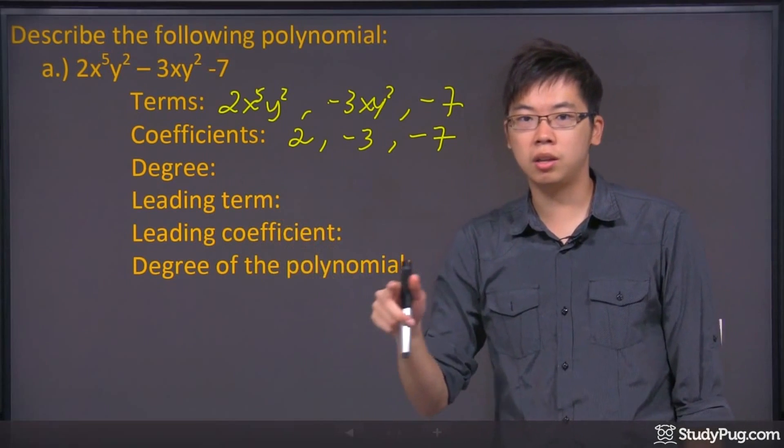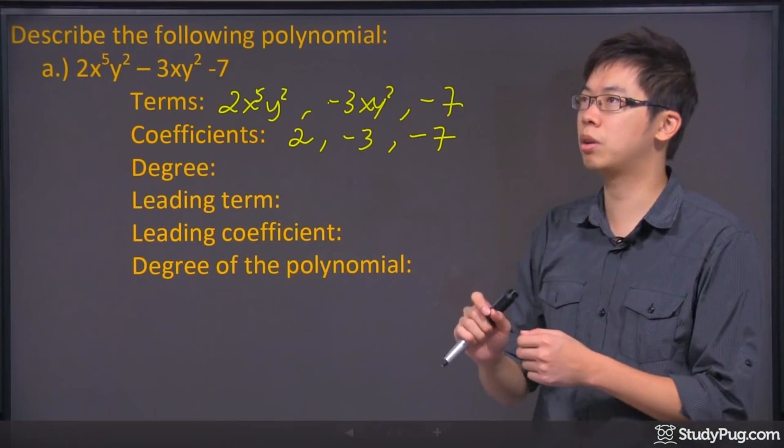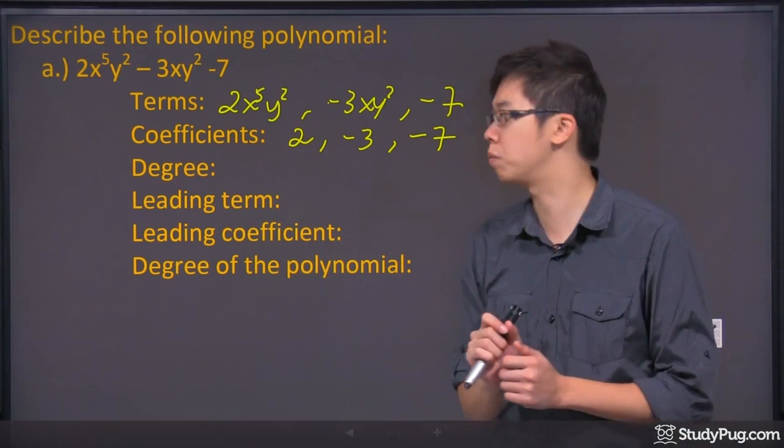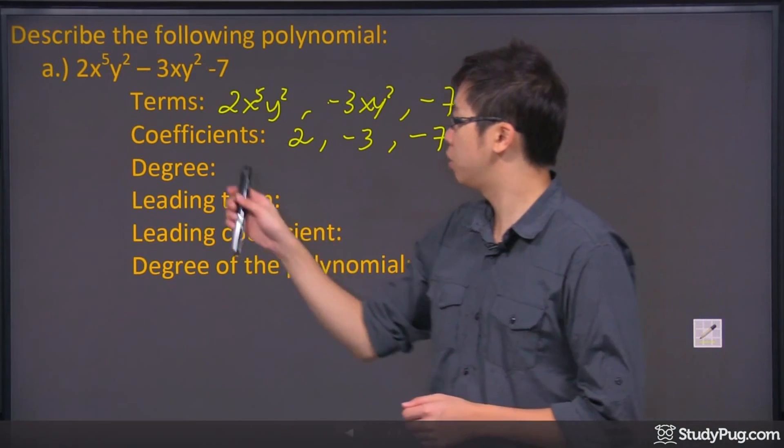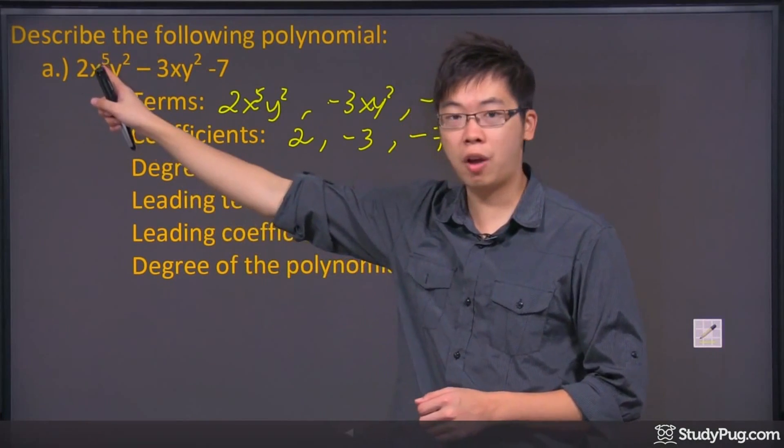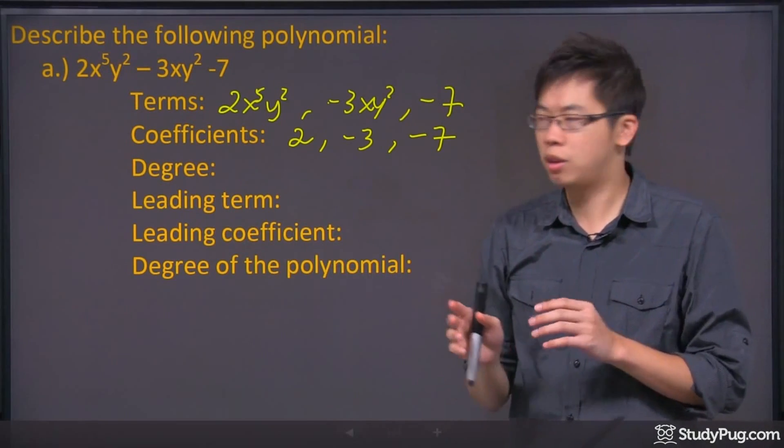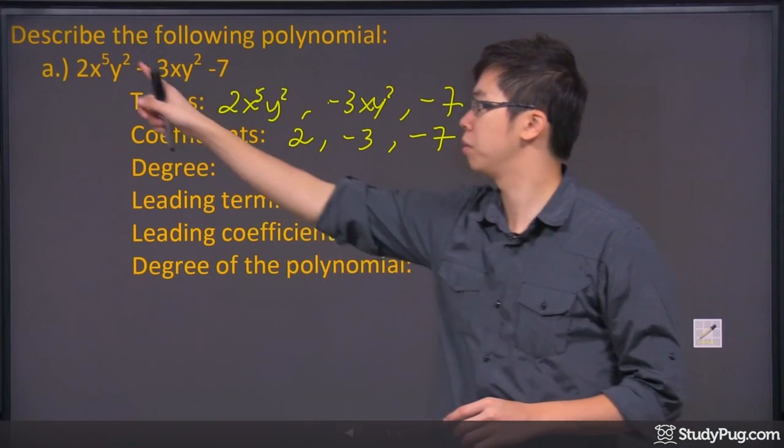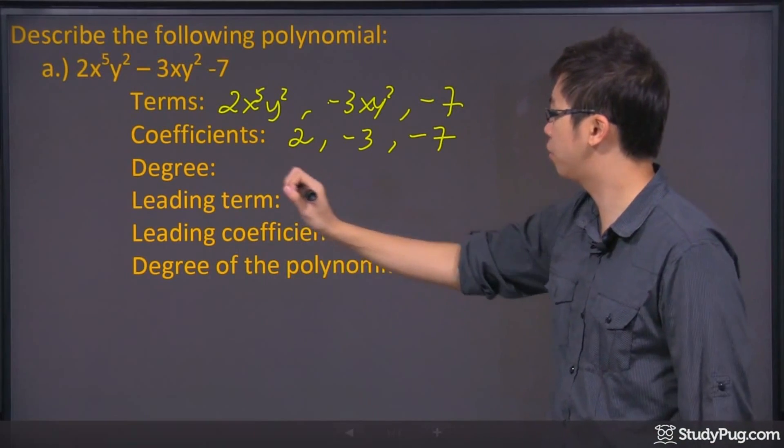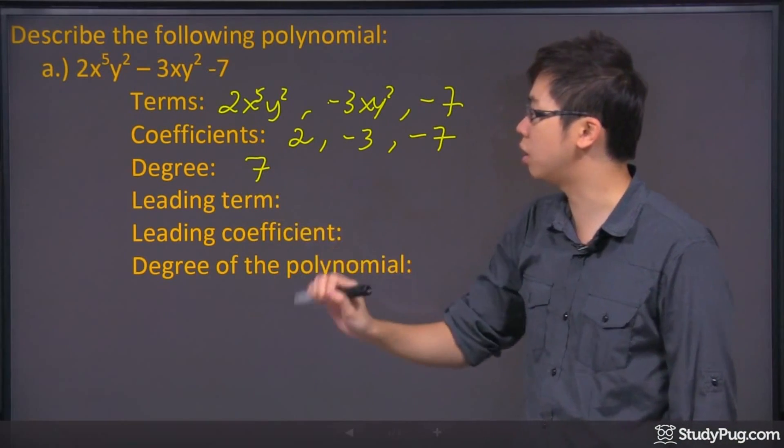The degree is the total number of the powers that you have in each term. So this is a little bit tricky. So if you look at the first one, it's x to the power of 5, but it also has a y to the power of 2. So it's not just 5. You're actually going to add up all the powers together. So 5 plus 2 gives you 7. So for the first term, we got 7 degree.